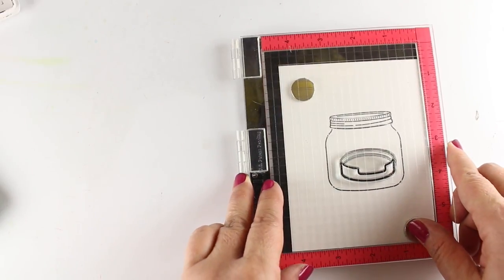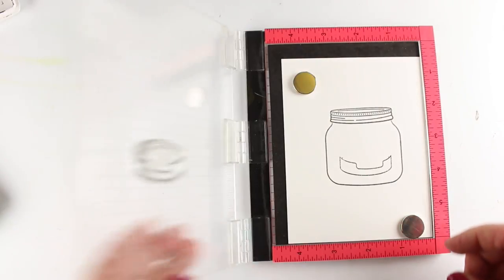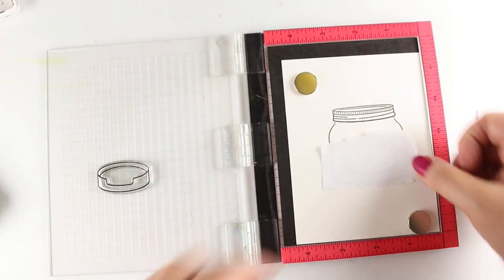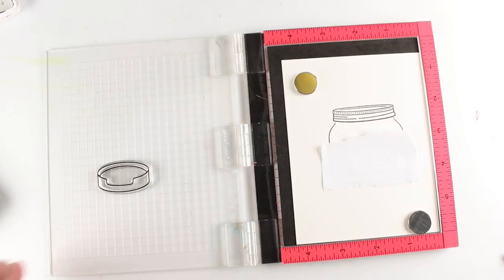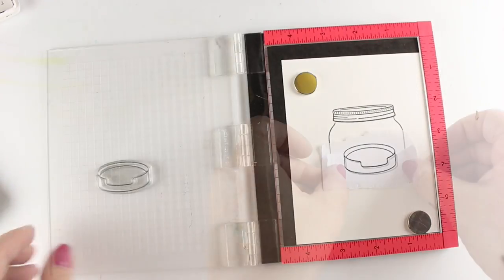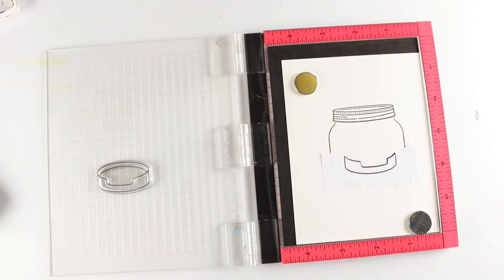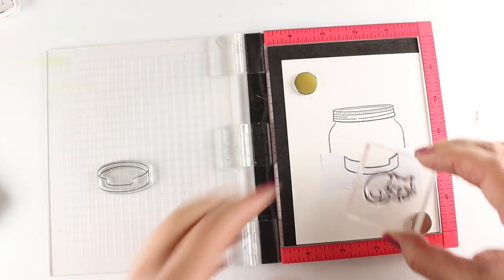So I'm going to get that lined up, stamp it, press it down. This is a Misti, by the way. If you have not seen a Misti before, you might want to get one because for masking things, it's really fabulous. This is the mini Misti. It comes in two sizes. I will link you in the doobly doo to a whole playlist full of Misti stuff.